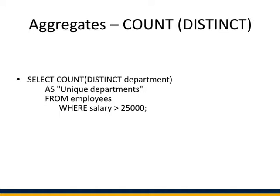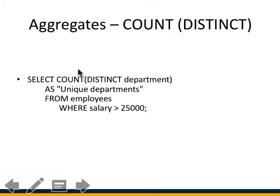Here we're asking how many employees have a salary above $25,000. We write SELECT COUNT(DISTINCT department) AS unique_department FROM employees WHERE salary condition. Using DISTINCT means if departments are repeated, we only count each department once. The result gives the count of unique departments where salary exceeds $25,000.